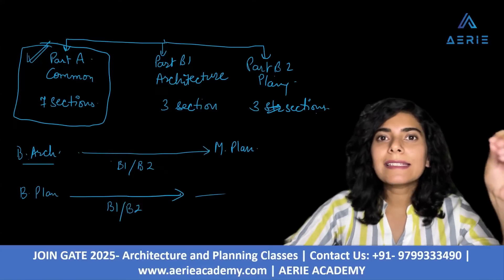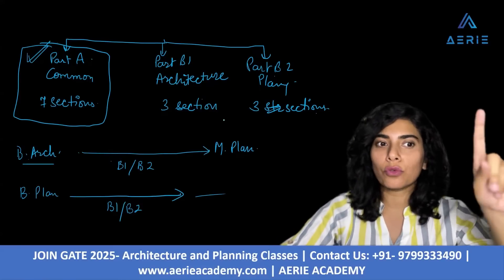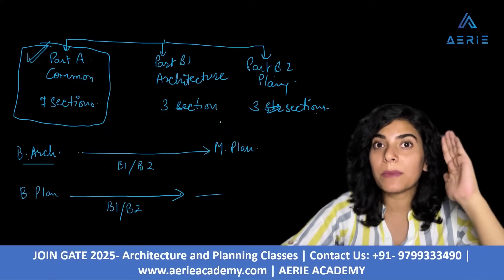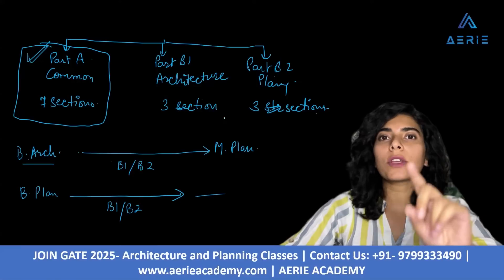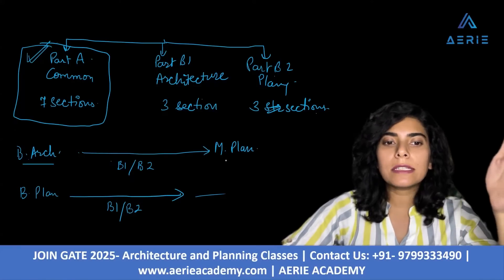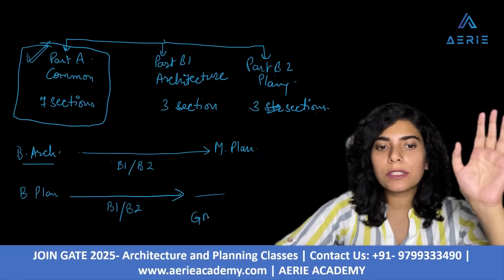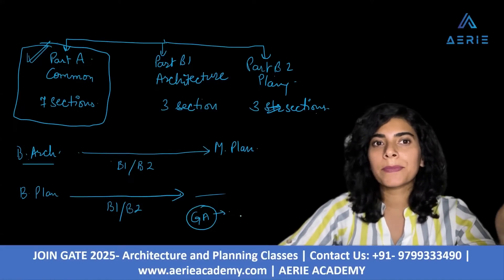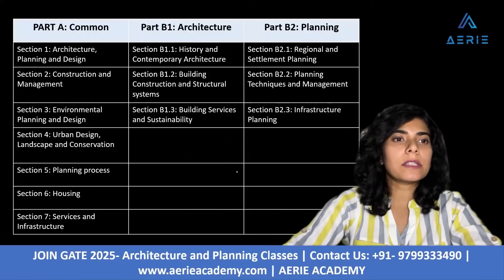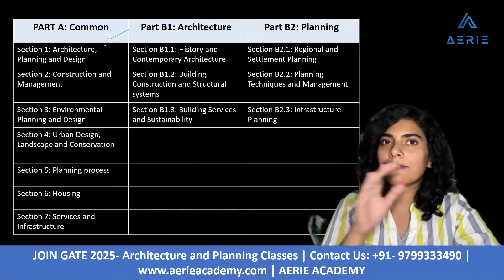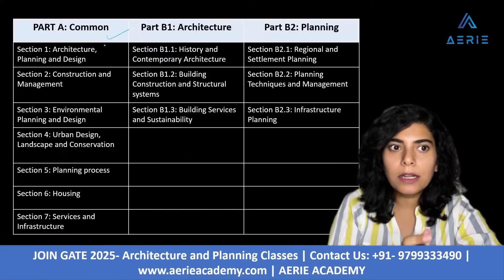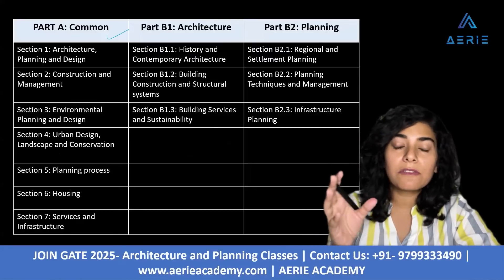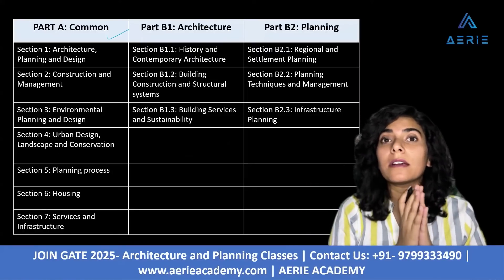So that is the bifurcation of syllabus — Part A is the mandatory common part and there is a choice between Part B1 and Part B2. Along with these sections, there is a General Aptitude section that is also mandatory for each and every student. Now looking at the syllabus, there are seven sections in Part A: Architecture Planning and Design, Construction and Management, Environmental Planning and Design, Urban Design, and Landscape Conservation.